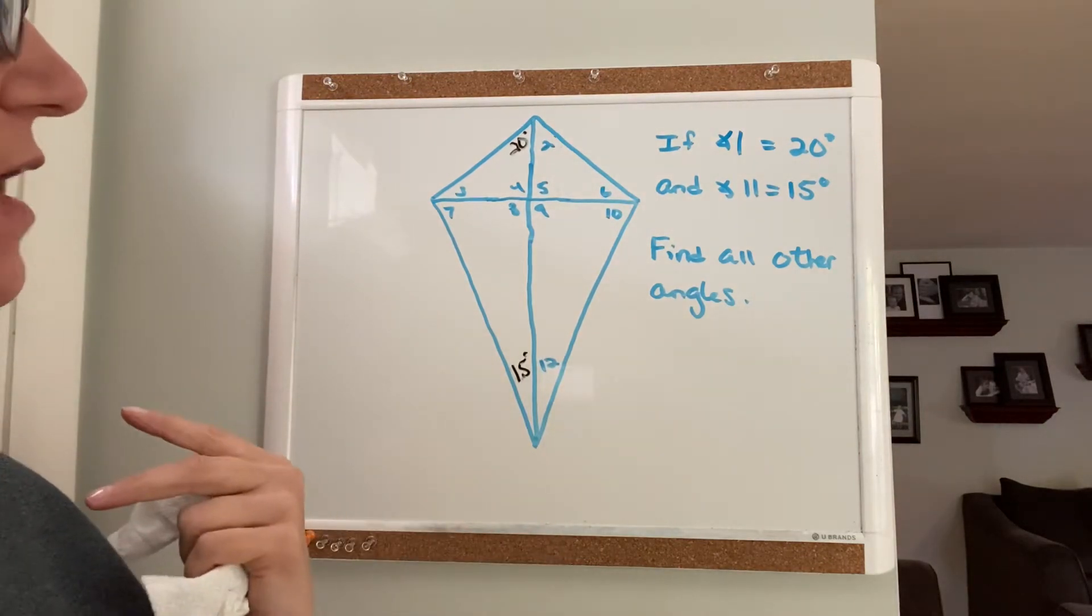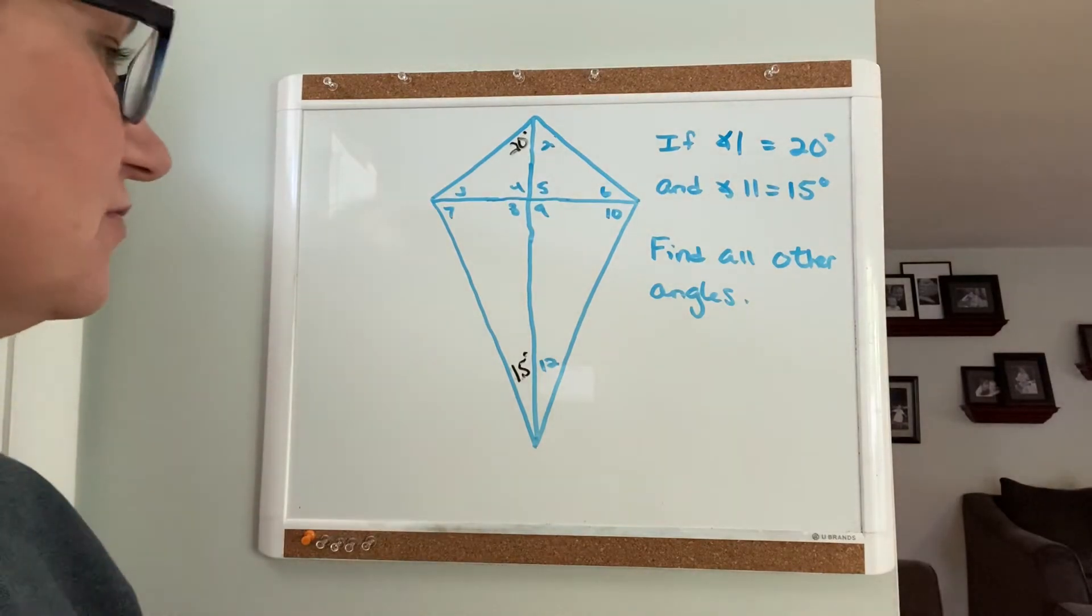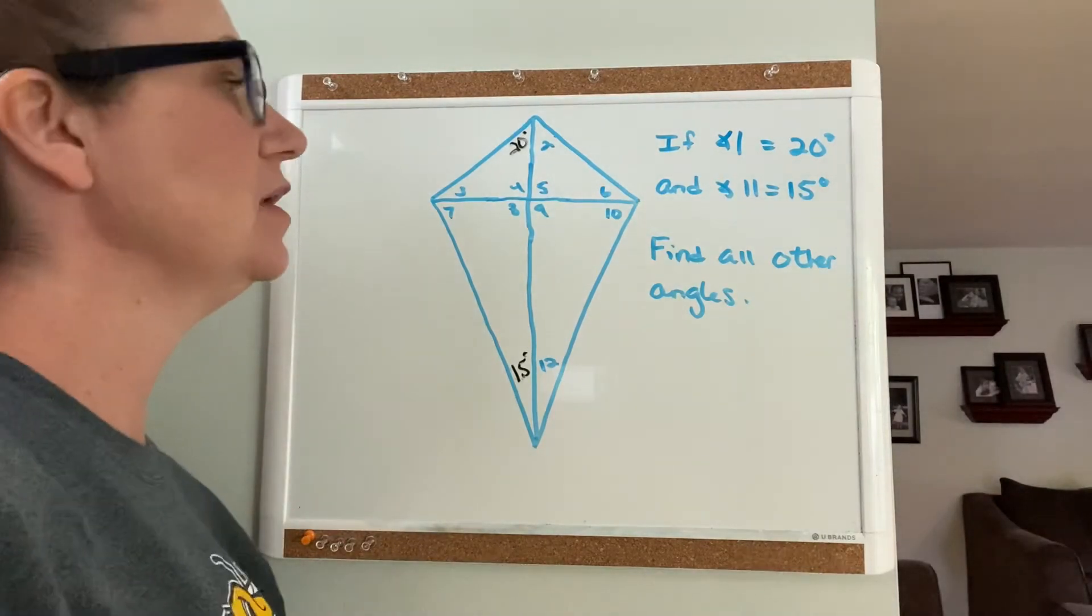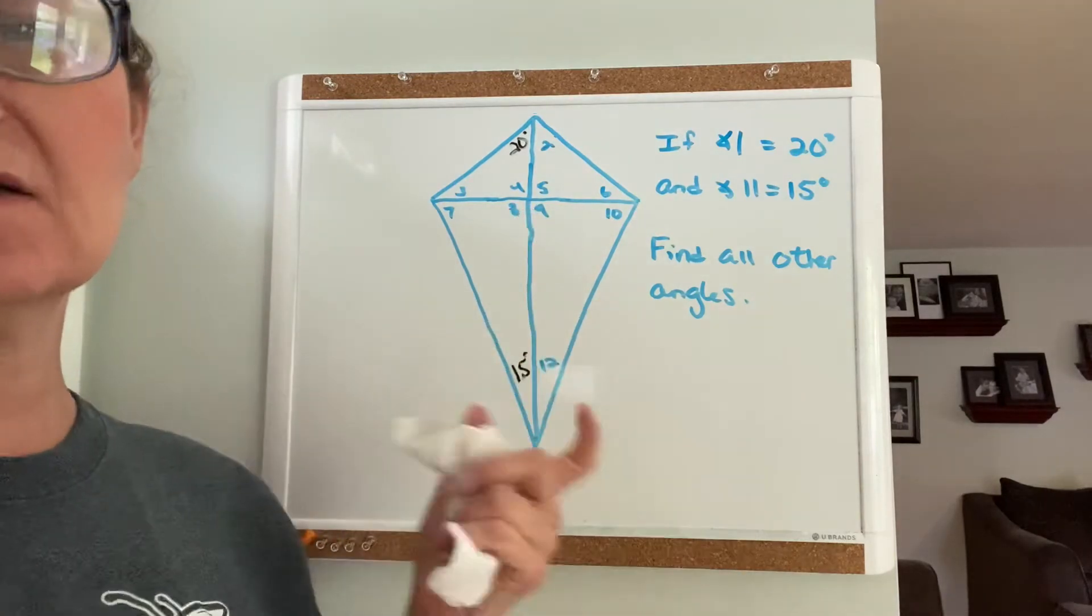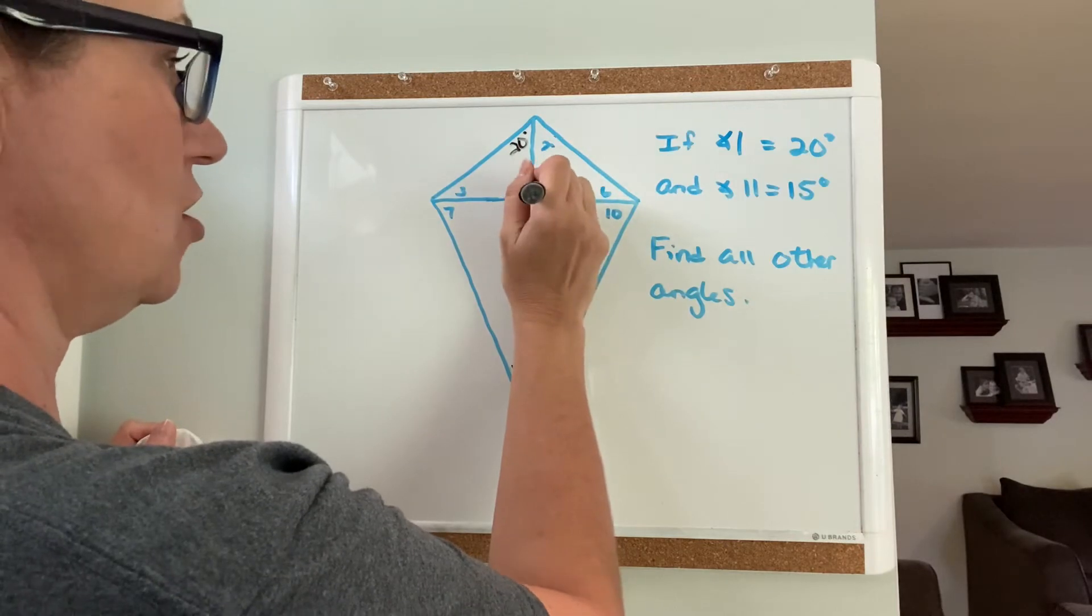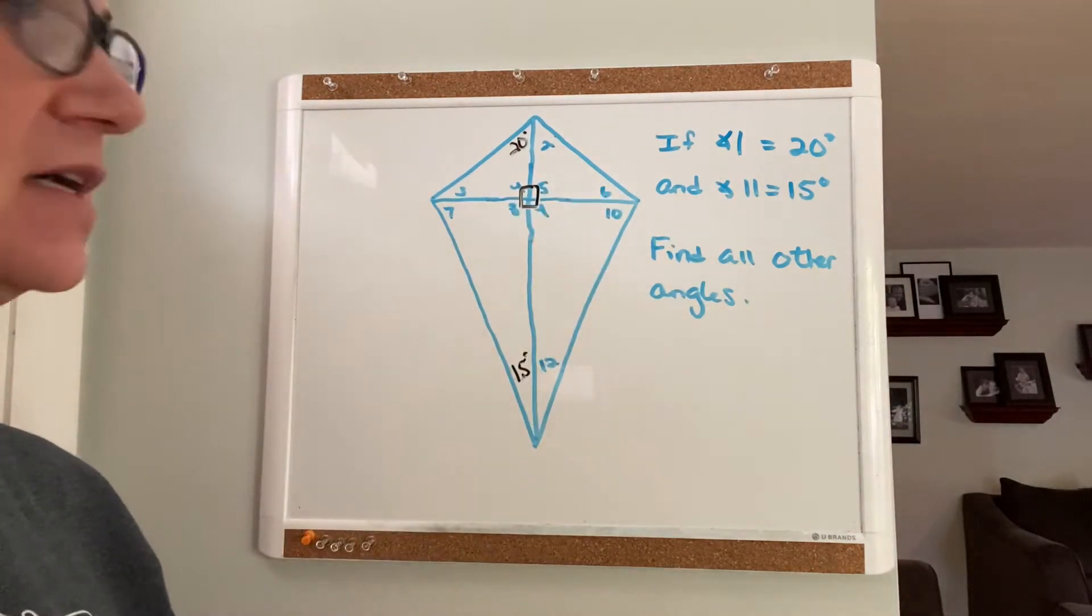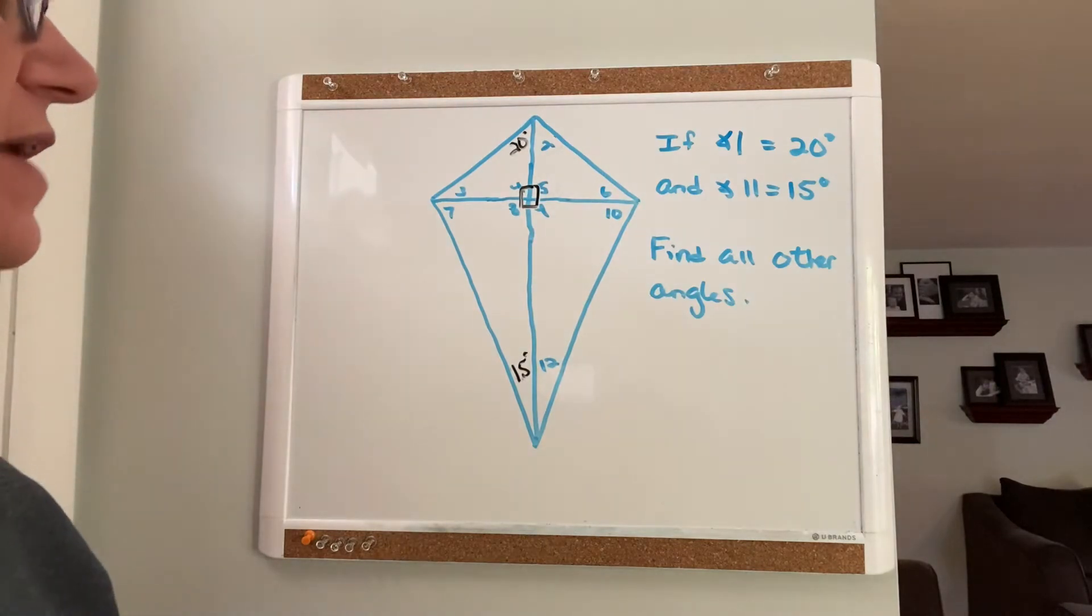The first property you need to recognize for kites is that the diagonals are perpendicular. If they're perpendicular, that means angles 4, 5, 8, and 9 are all 90 degree angles.